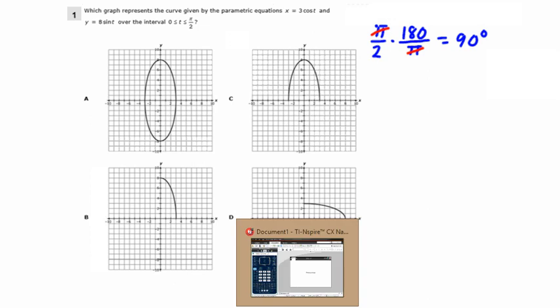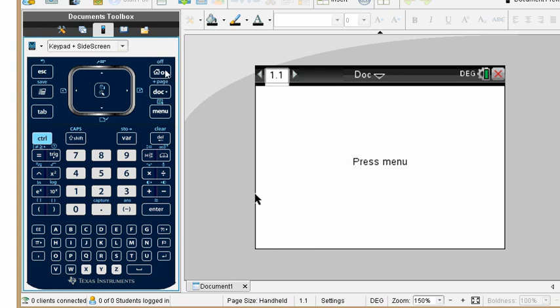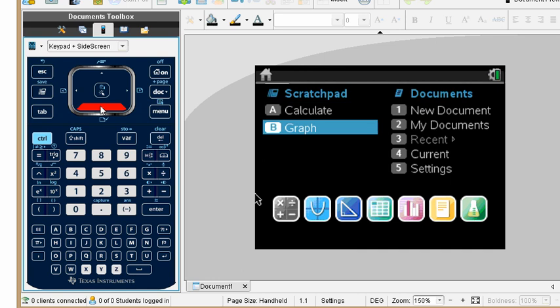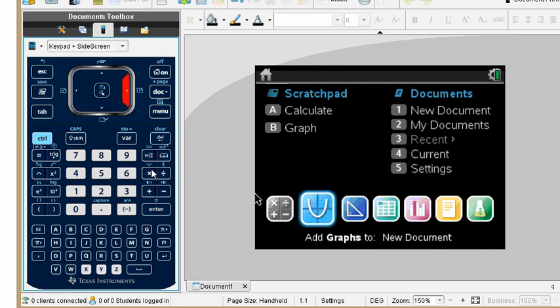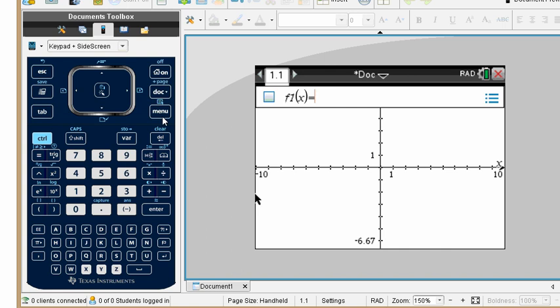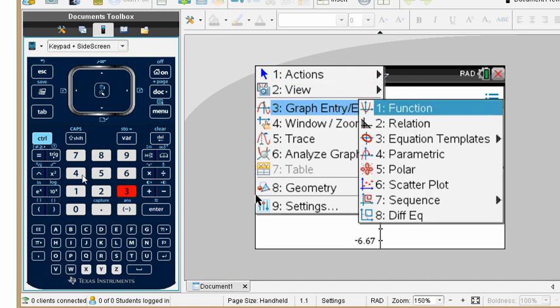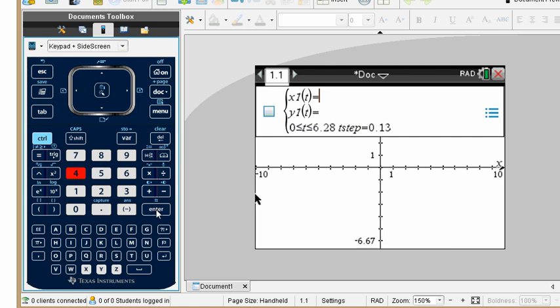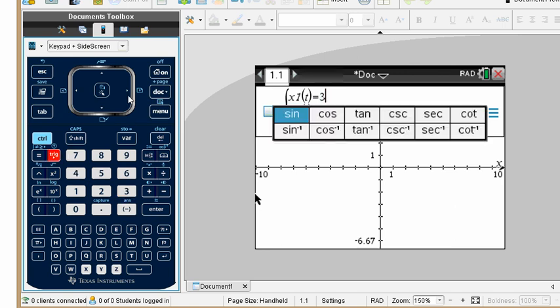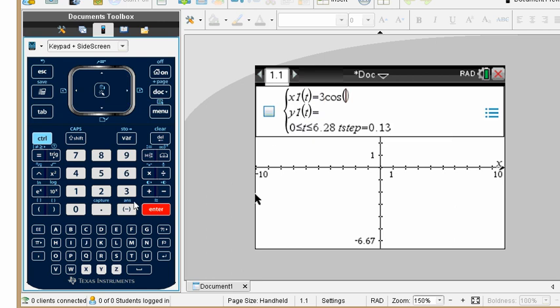But in case that's not apparent, we can go and graph parametrically. I'm going to get a graph page in our TI-Nspire CX calculator. We go to menu 3, 4, graph parametric, and we're going to put in 3 cosine t for the x equation.